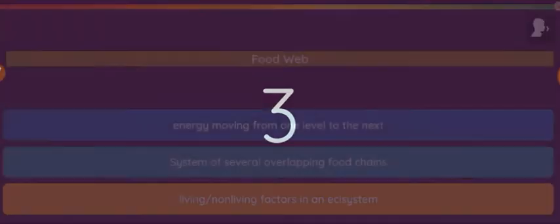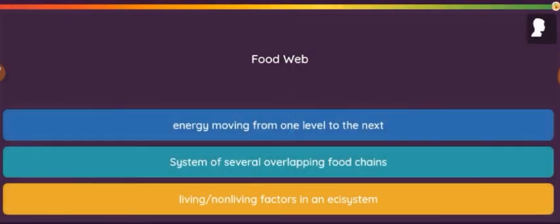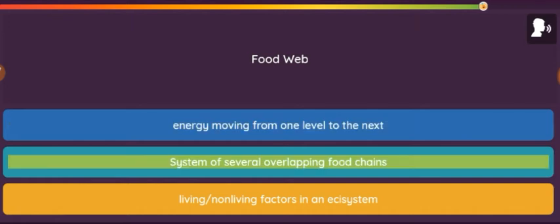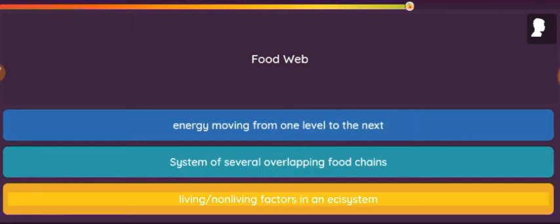Question: Food web. Option 1: Energy moving from one level to the next. Option 2: System of several overlapping food chains. Option 3: Living and non-living factors in an ecosystem.